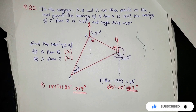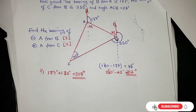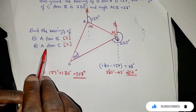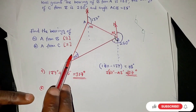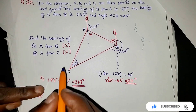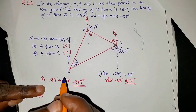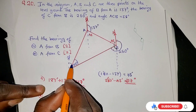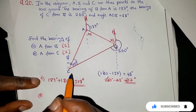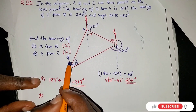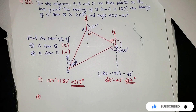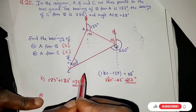Now for part (b), we need to find the bearing of A from C. Let's draw the north line at C to help us find the bearing. We need to find the angle from north at C up to the line connecting C and A — that smaller angle shown in the diagram.